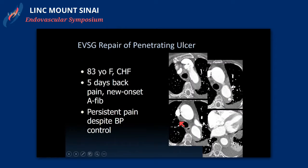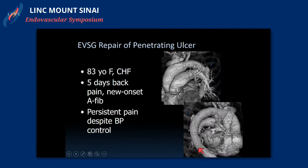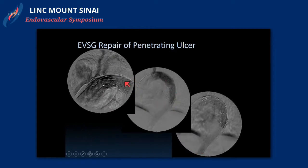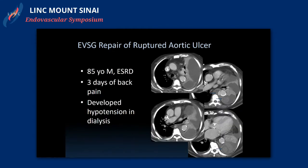Case one: an 83-year-old with history of CHF presenting with five days of back pain, new-onset atrial fibrillation, and persistent pain despite blood pressure control. On CT scan, you could see an ulcerated penetrating aortic ulcer, along with a reactive pleural effusion. Because the patient had persistent pain despite blood pressure control, we ended up stent grafting her, and her pain resolved immediately after repair.